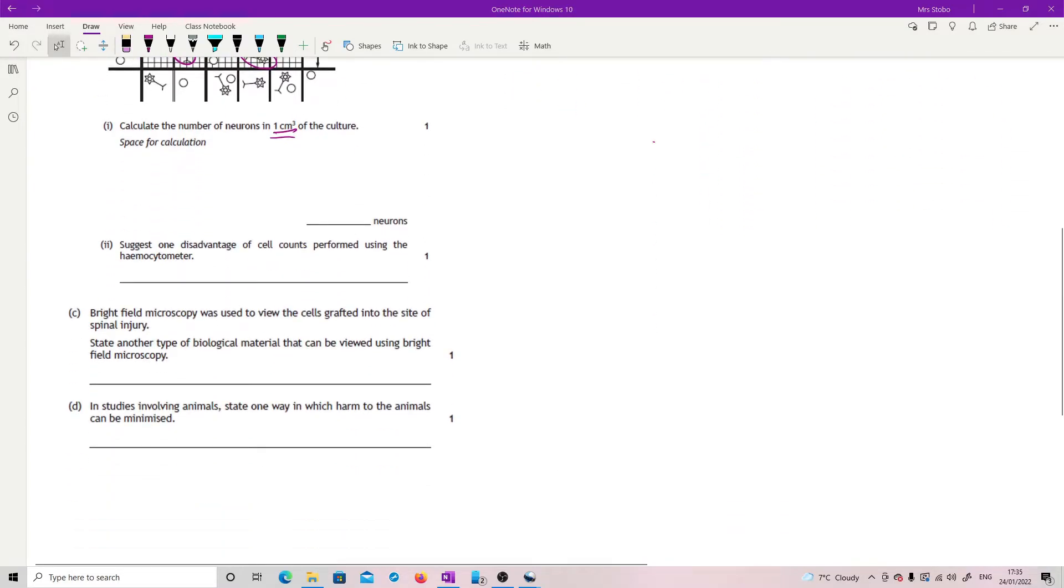Suggest one disadvantage of cell counts performed using a hemocytometer. It's basically just your list of things that could go wrong. It's a big issue with dead or viable cells. So it only works if you stain them to know if it's a viable cell count that you're given.